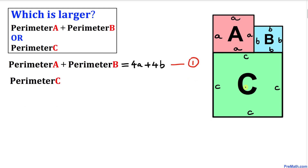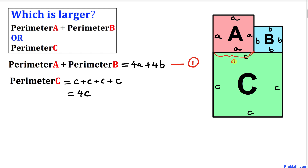Now let's focus on the big square C and we are interested in perimeter C. Its perimeter is simply the sum of all its side lengths — we add c four times — so this turns out to be four times c.